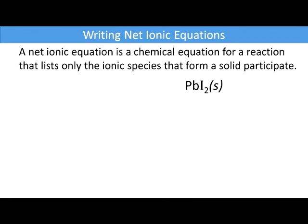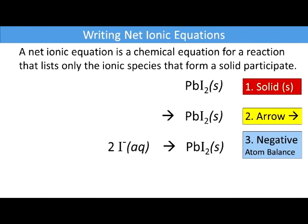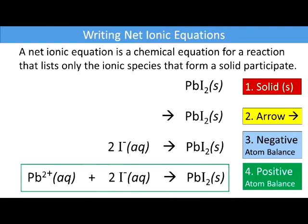Let's take another example. Lead(II) iodide is a solid — it will form as a precipitate in certain reactions. So we write the solid, then we write the arrow. Next, we write the negative charge ion. Note that we have two iodine atoms, therefore we write a two in front of I⁻, and it's Aq because it's soluble. Then we write the positive ion to balance out the charges. This gives us our net ionic equation for lead(II) iodide.